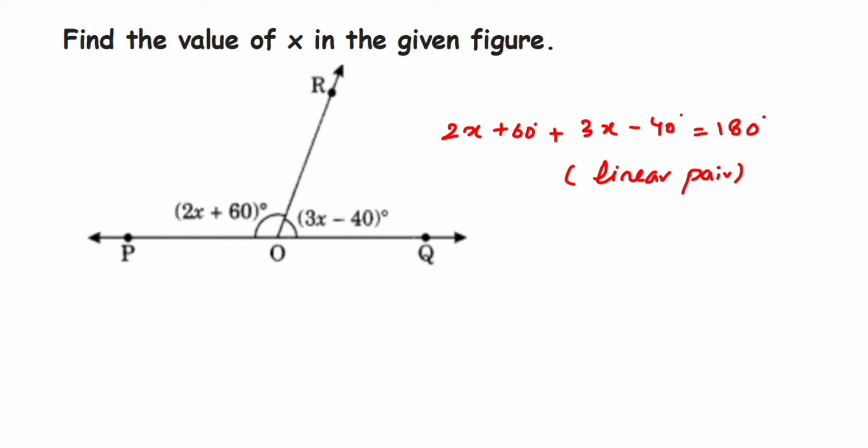Because of the linear pair we got this. Now let's add the variables. So 2x plus 3x will be 5x, and then 60 minus 40 will be 20. So 5x plus 20 is equal to 180 degrees.